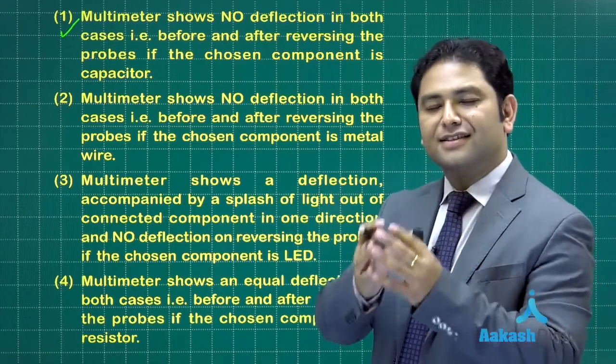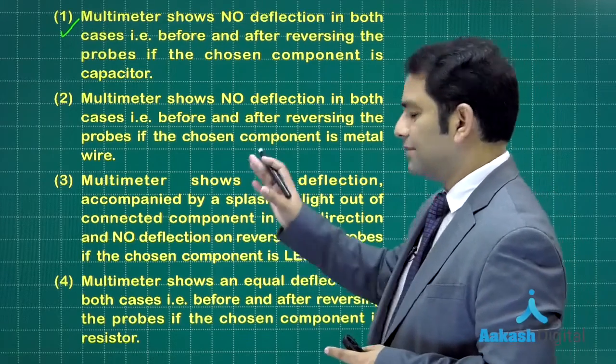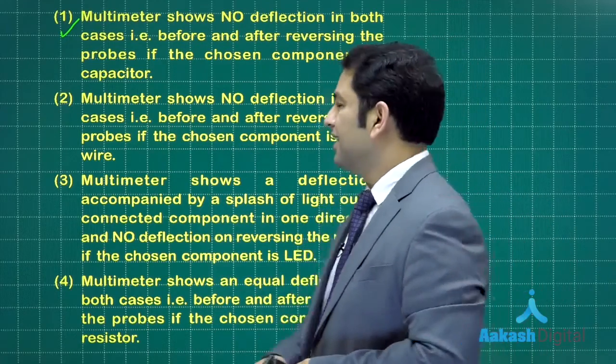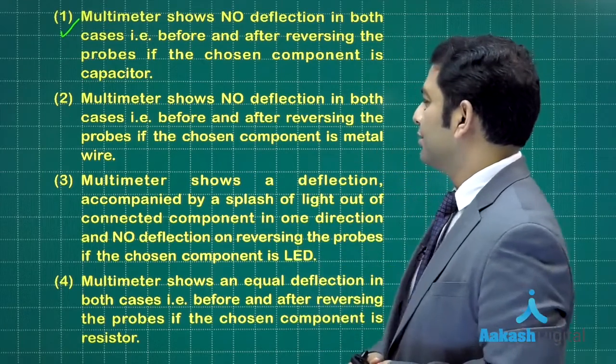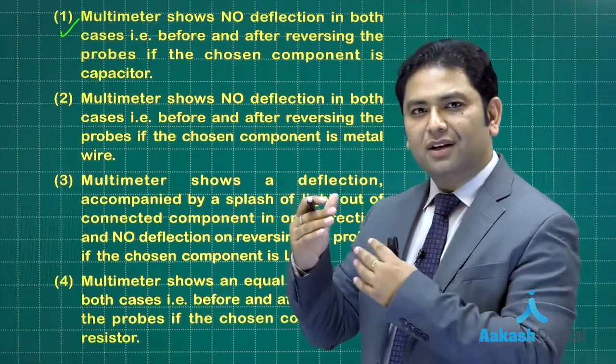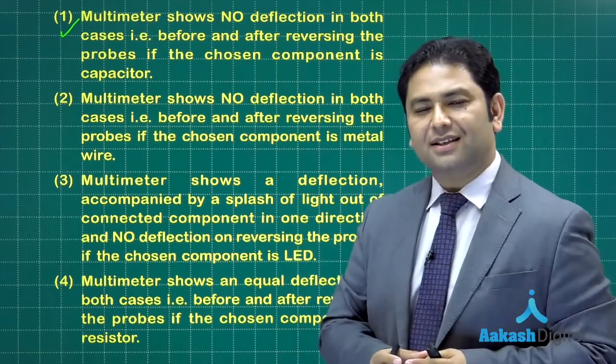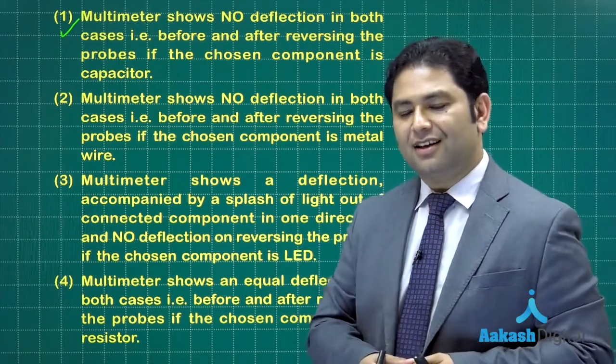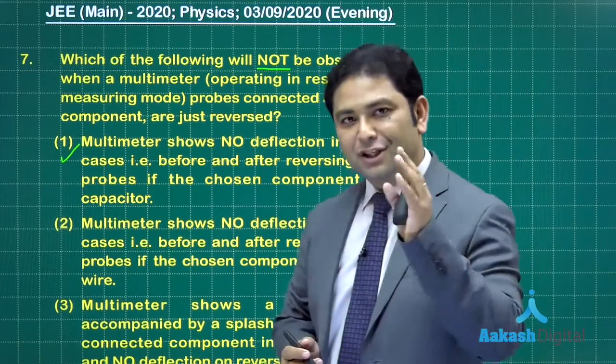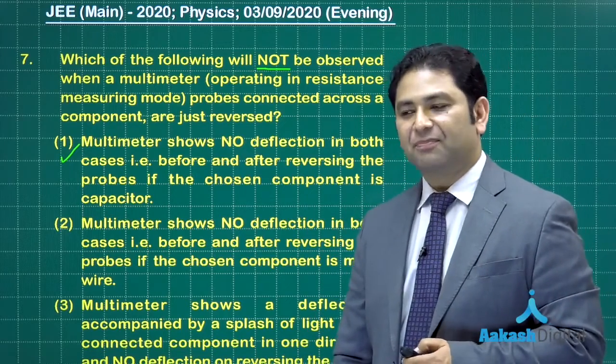In the third case, what does that mean? While the forward bias happens there is current, while the reverse bias happens there would be no current. So in that case, option number three is also correct, so we will not be choosing it - the fact is correct. And for the second, it shows no deflection in both cases before and after reversing the probe if the chosen component is metal wire. This needs a little bit of interpretation from our side. The metal wire has a negligible resistance, so in that case the deflection would be almost nil. So in that way, amongst all these four options, one is the best possible candidate in terms of option because this fact will not happen.